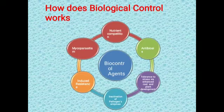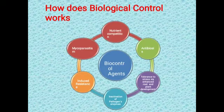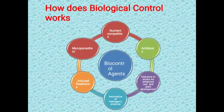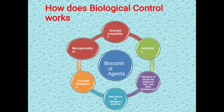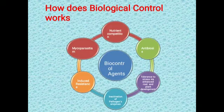Second, antibiosis: when a microorganism like Trichoderma viride grows, it secretes toxic substances — for example, viridin. When viridin comes in contact with harmful pathogens in the soil, it kills them. Pathogens such as Fusarium, Alternaria, Pythium, and Rhizoctonia are easily killed by the substance secreted by Trichoderma viride. That substance is called an antibiotic, and this phenomenon is called antibiosis.